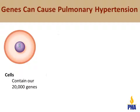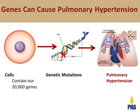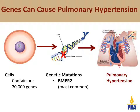A mutation in one of several different genes can cause pulmonary hypertension. A mutation in a gene called bone morphogenetic protein receptor 2, or BMPR2, is the most common genetic cause of pulmonary hypertension. Approximately 70% of people with a family history of pulmonary hypertension have a mutation in the BMPR2 gene. About 20% of people with idiopathic pulmonary hypertension have a BMPR2 mutation. The other genetic causes of pulmonary hypertension are rare, and some genetic causes are not yet known.